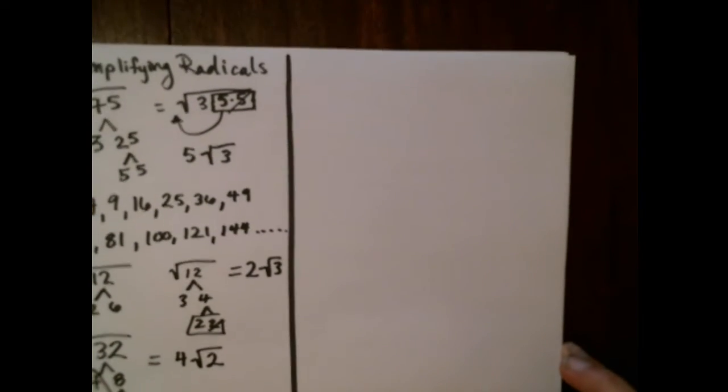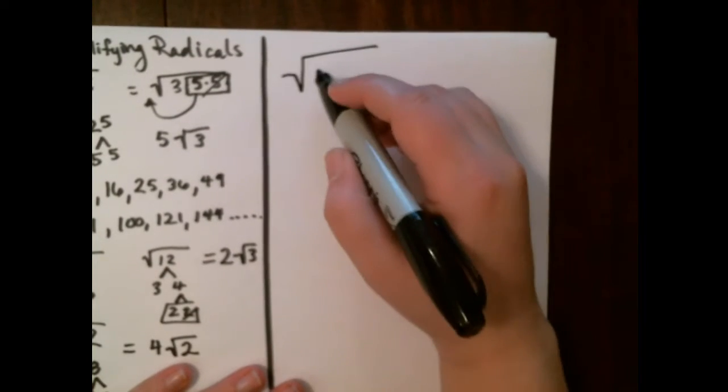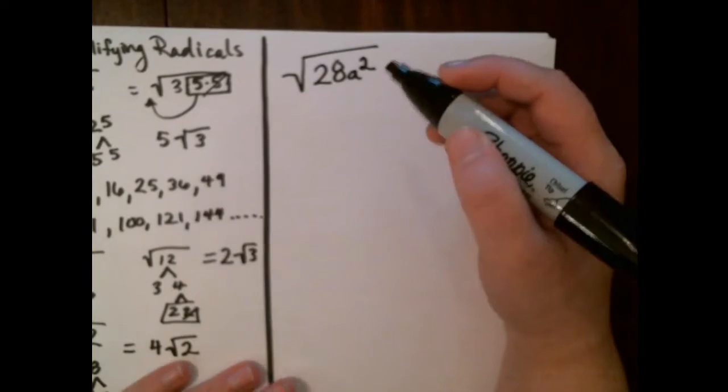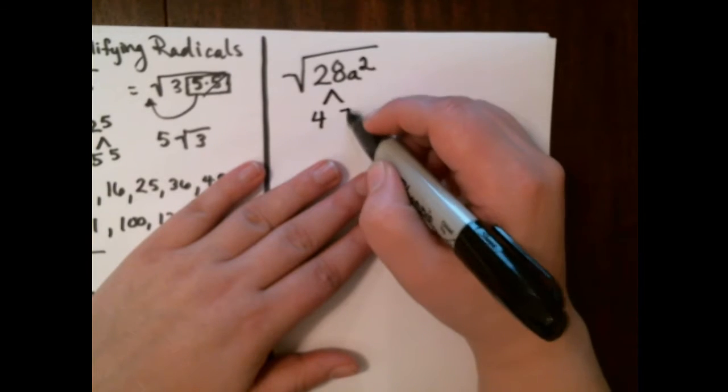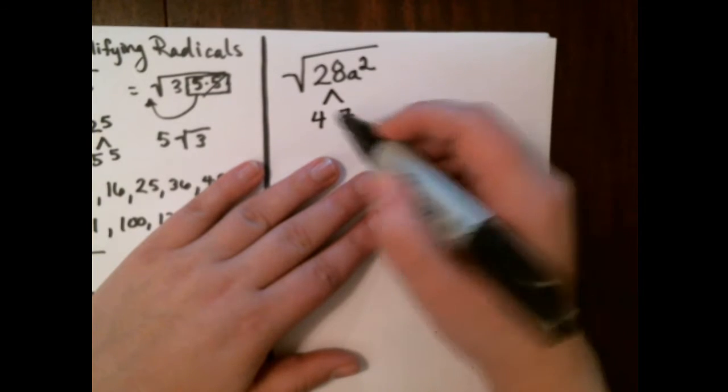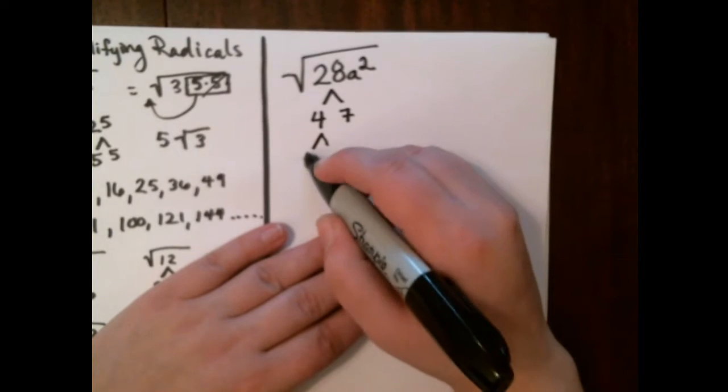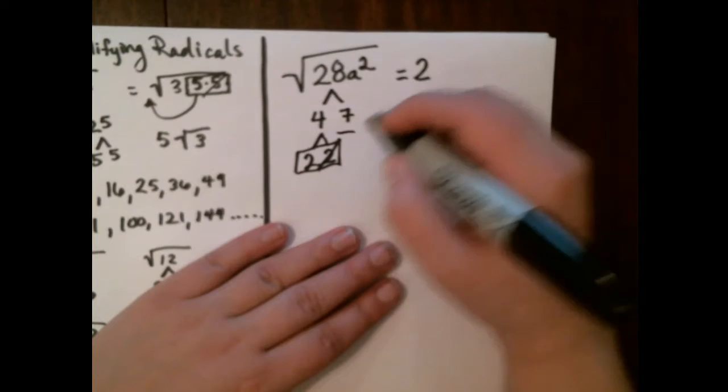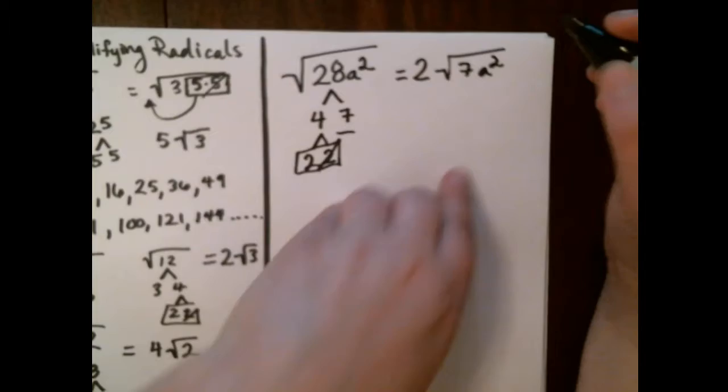Let's do some harder ones with variables. Let's say that I have the square root of 28a². Again, I'm going to break down this 28. I'm going to break that down into 4 and 7. The 7 is prime, meaning only the numbers 1 and 7 multiply to it, so that's no help. I'm going to break down the 4: 2 and 2. Got a group. A 2 comes out. The 7's stuck inside.